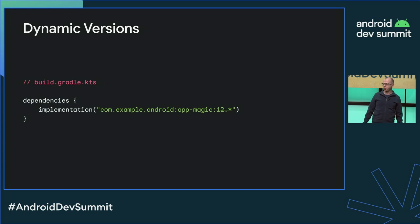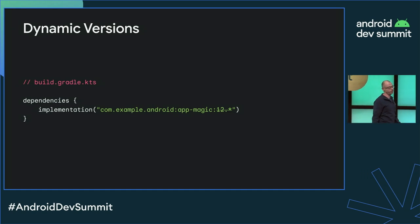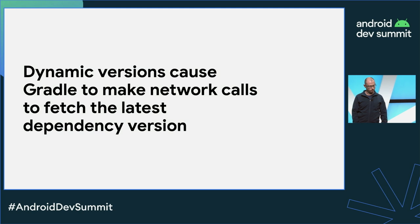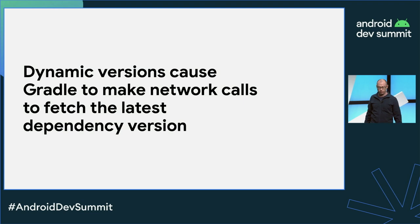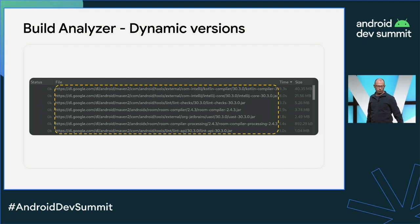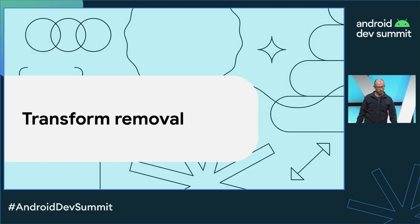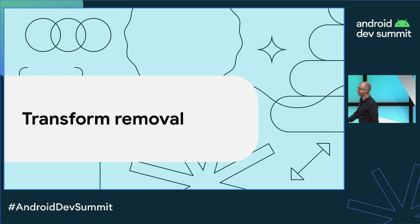Build Analyzer can also help you spot other build problems such as dynamic versions. A dynamic version is a dependency version that uses plus or wildcard characters in the dependency declaration. Dynamic versions cause Gradle to make network calls to fetch the latest dependency versions between builds — you obviously should not be using them. If you are using dynamic dependency versions, you will see downloads even after running incremental builds.